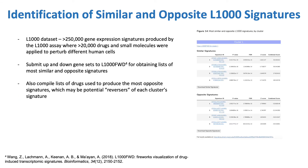Lastly, I also use the gene sets to find the most similar and opposite gene expression signatures in the L1000 dataset for each cluster, and present these in a downloadable table. I also present information on the drugs used to produce the most opposite signatures. An interpretation of these is potential treatments that may reverse the abnormal gene expression characteristic to each cluster.